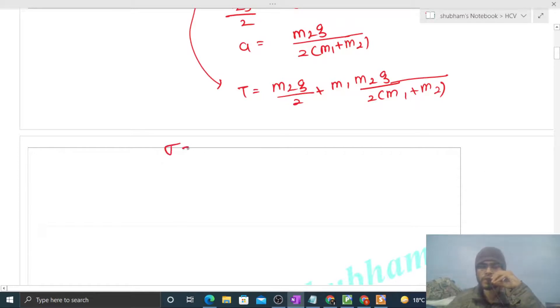Now what will be the value of stress? That will be tension divided by cross-sectional area. The tension in this string divided by the cross-sectional area of the string gives the value of stress.